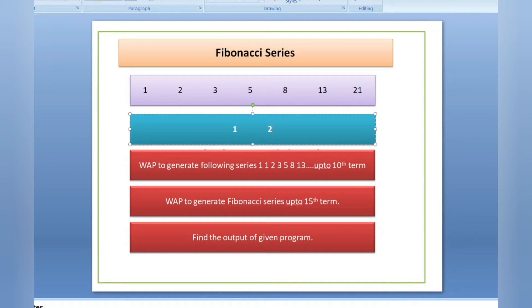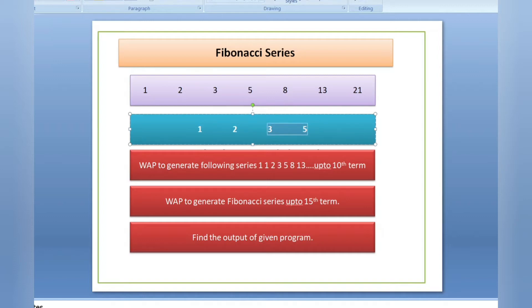The sum of the last two numbers gives the next number. We have 1 and 2; 2 plus 1 is 3. Then 3 plus 2 is 5, then 5 plus 3 is 8, then 8 plus 5 is 13, and 13 plus 8 is 21. This is how the Fibonacci series grows.